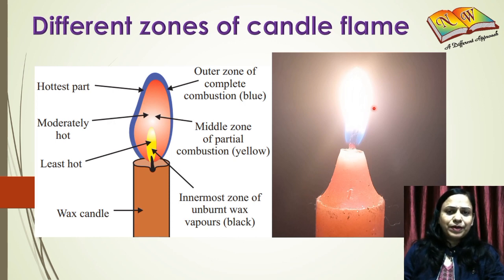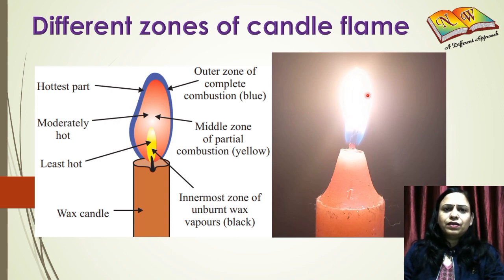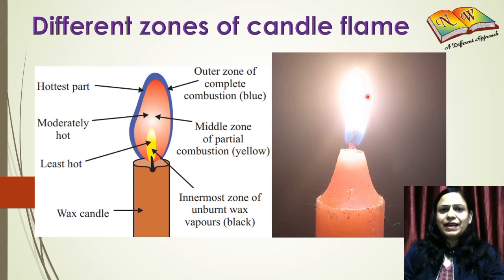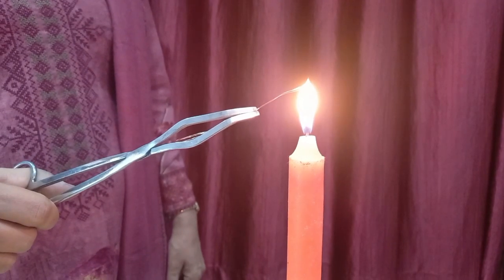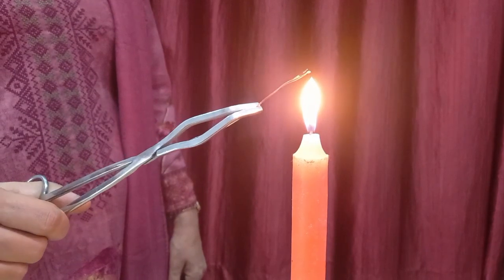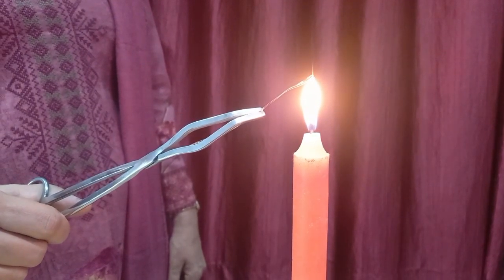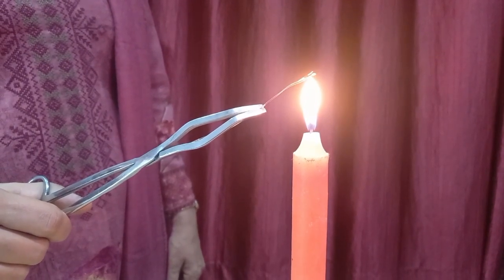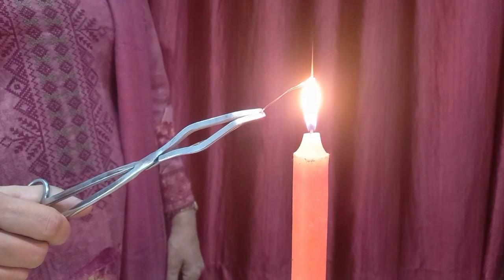It is responsible for all the heat that you can feel being given out through the flame. If you hold a copper wire in this part of the flame, the wire turns red, showing the huge amount of heat being emitted. On holding a copper wire in the outermost zone of the flame, we see that it turns red hot in a few seconds.